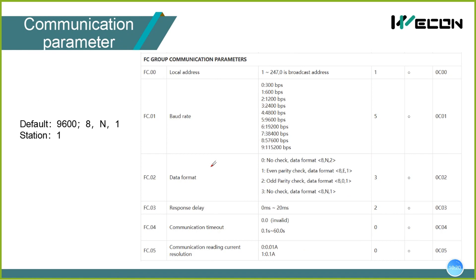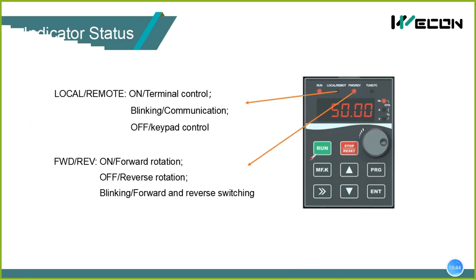Set the communication parameters in the FC group. Generally, the default parameters are OK. After this setting, when the inverter is in communication mode, you can see the SET indicator blinking. If the indicator is off, it belongs to keyboard control.